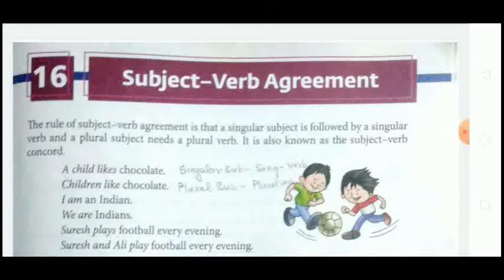The opposites cannot be done. For example, if the subject is singular and the verb is plural, the sentence will be wrong. If the subject is plural and the verb is singular, the sentence will also be wrong. The correct form is: singular subject with singular verb, and plural subject with plural verb. This is what is called subject and verb agreement.